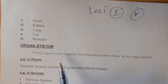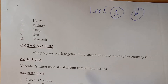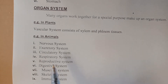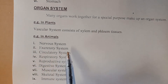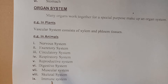Many organs working together for a specific purpose make up an organ system. In plants, the vascular system consists of xylem and phloem. In animals, different systems work together: the nervous system, excretory system, circulatory system, respiratory system, reproductive system, digestive system, muscular system, skeletal system, and immune system.